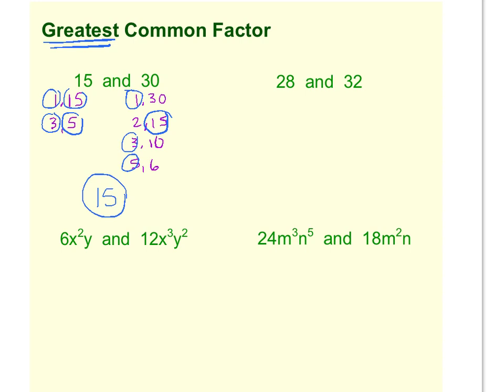So if we can think, what numbers fit into both 28 and 32? Well 2 fits into both, that's a common factor. But is there a bigger number than 2 that will fit into 28 and 32? 4 fits into both. And so you just kind of go through your factors and see what the biggest one is. In this case, I think 4 is the biggest number that fits into both 28 and 32. So our greatest common factor, also abbreviated as the GCF, is 4.